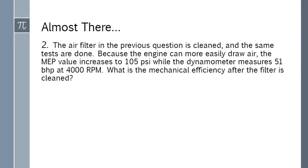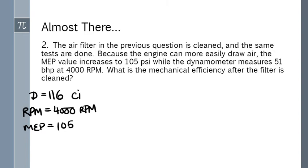This is a continuation. We're going to take the same engine, so we know the displacement remains 116 cubic inches and that we know we're doing the same speed which is 4000 rpm. But we cleaned the air filter and we did the same tests and the mean effective pressure increased to 105 psi, so all our calculations we kind of have to do again. And we're going to have brake horsepower of 51.